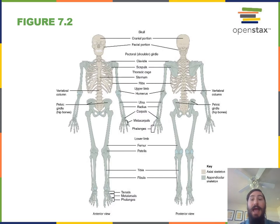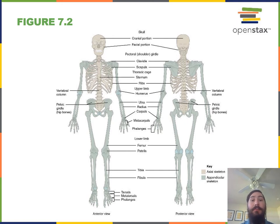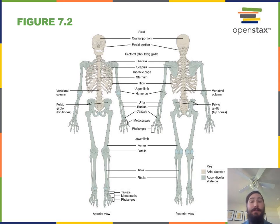The axial skeleton are the bones found along the midline, in contrast to the appendicular skeleton, which are the bones found in the limbs and the girdles that connect the limb bones to the axial skeleton.